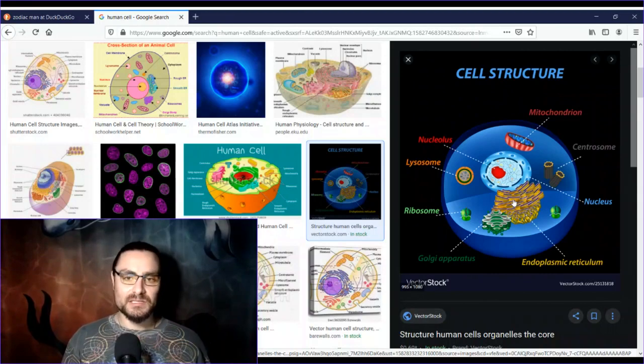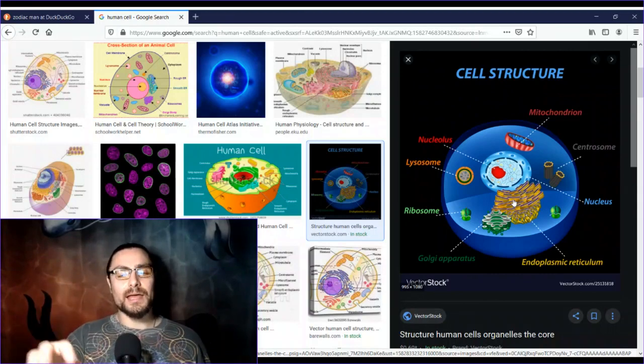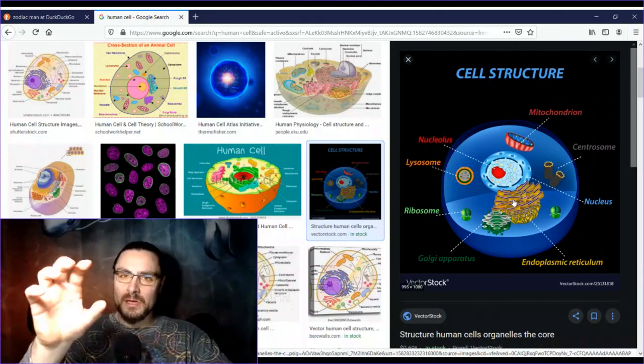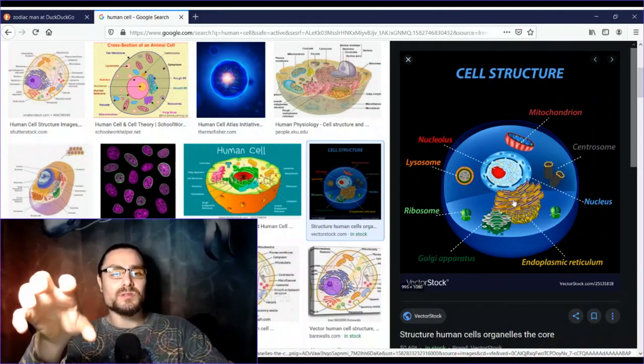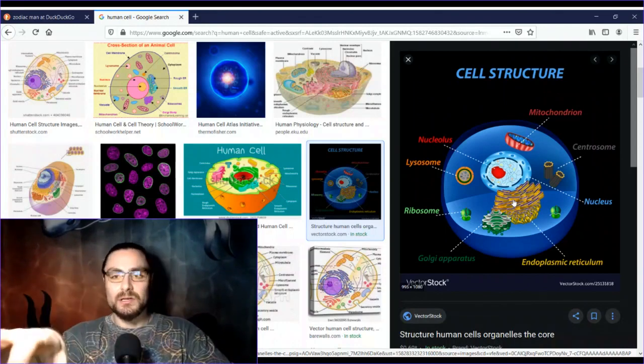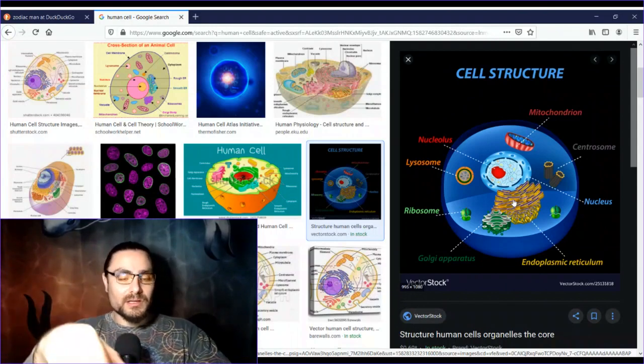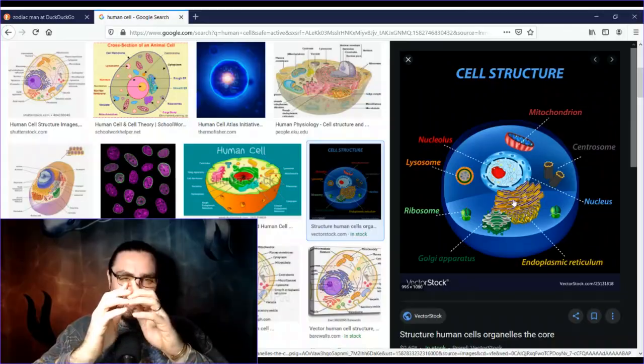When the kundalini energy moves through your system, it forcibly moves the assemblage point to a new position where you can actually see more of and interact with more of the electromagnetic spectrum. Most people's assemblage point is in a very fixed position, and due to the positioning of their assemblage point, they can only see reality through a very narrow gap, and that's why people are mind controlled.